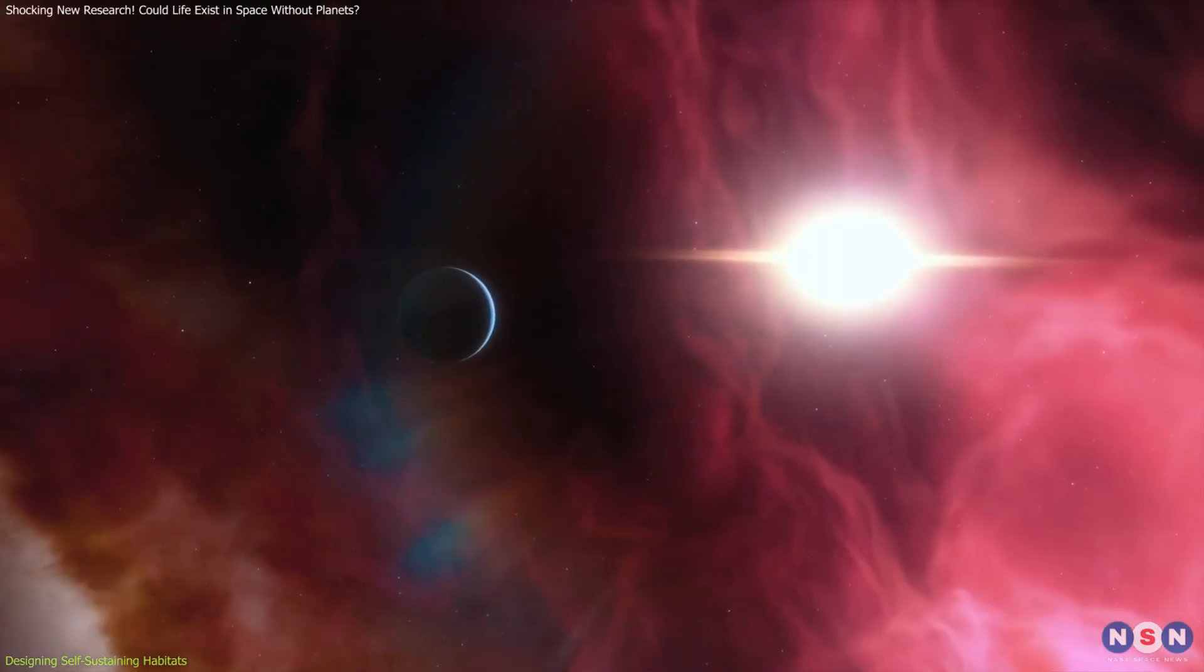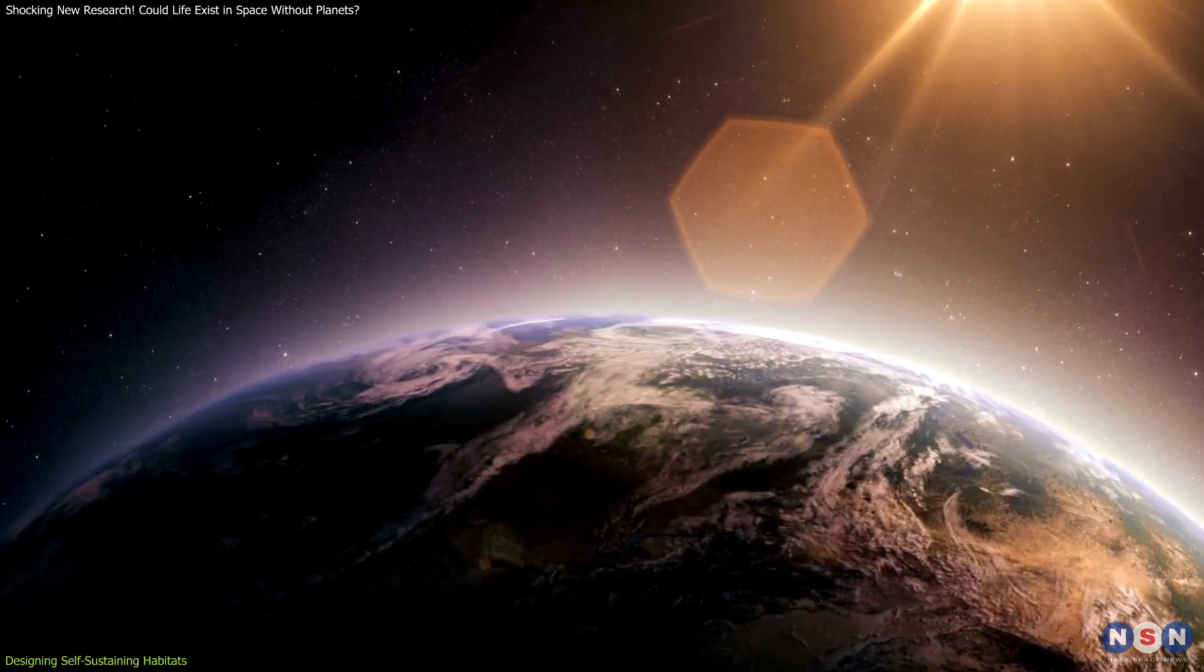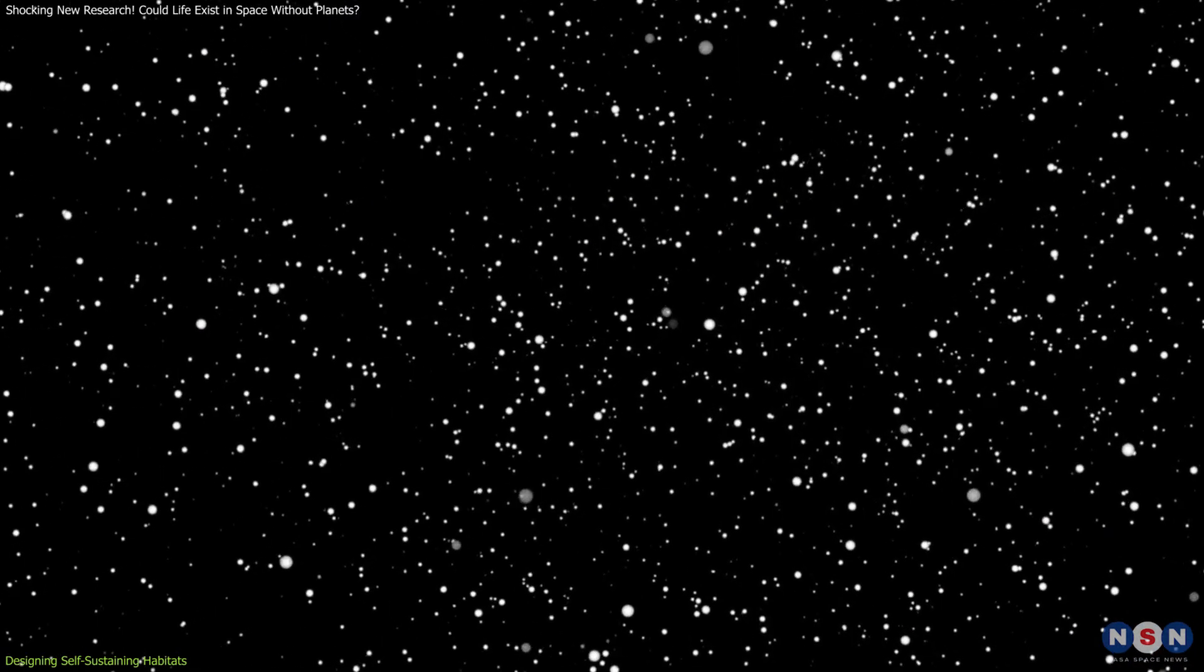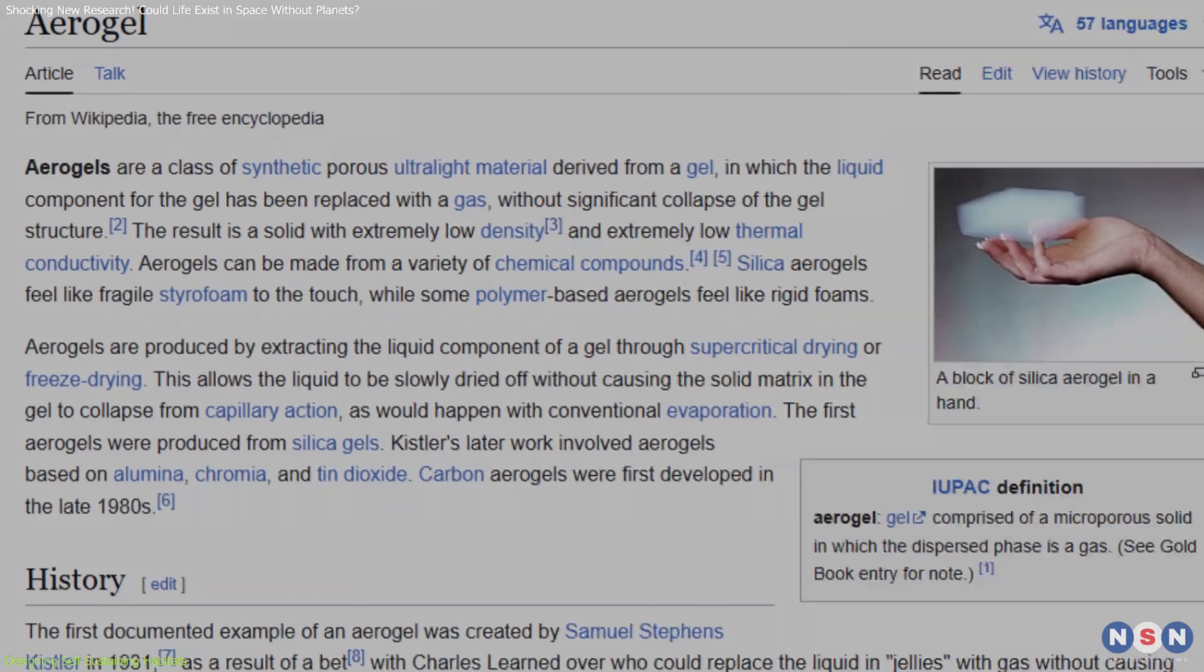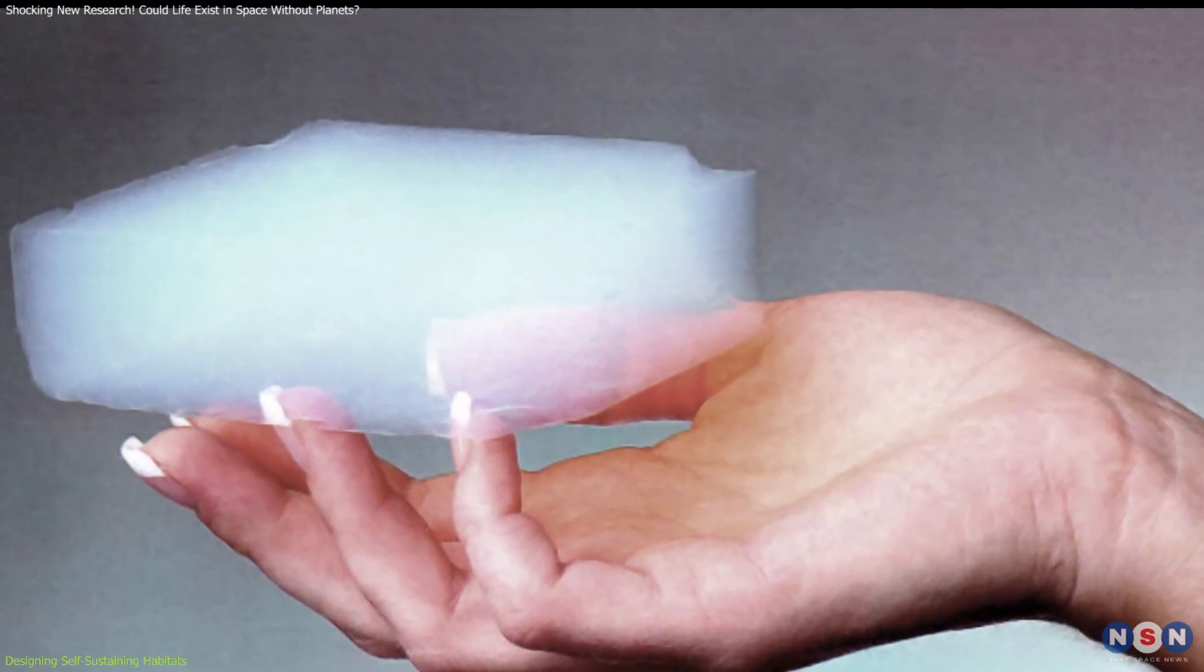Temperature regulation poses another critical challenge. Earth's atmosphere stabilizes temperatures through the greenhouse effect, but space lacks such insulation. Silica aerogels, renowned for their low thermal conductivity, could provide an alternative.